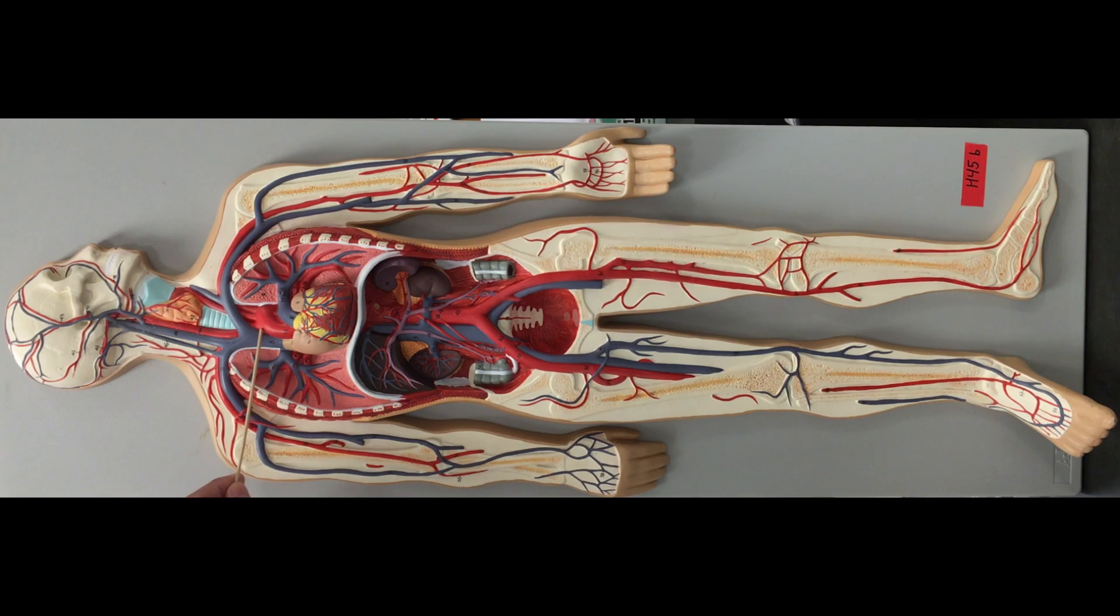We're going to start right here at our major conducting artery, the ascending aorta. It's going to continue to become our aortic arch. Once we drop behind the heart, it is our descending or thoracic aorta. Once it breaches the diaphragm, it becomes the abdominal aorta, and we'll look at that in a little bit.